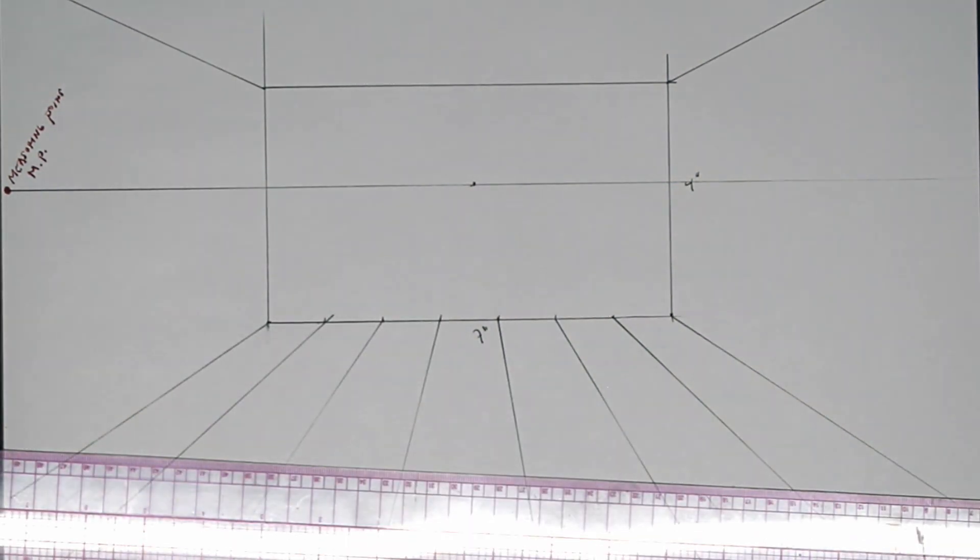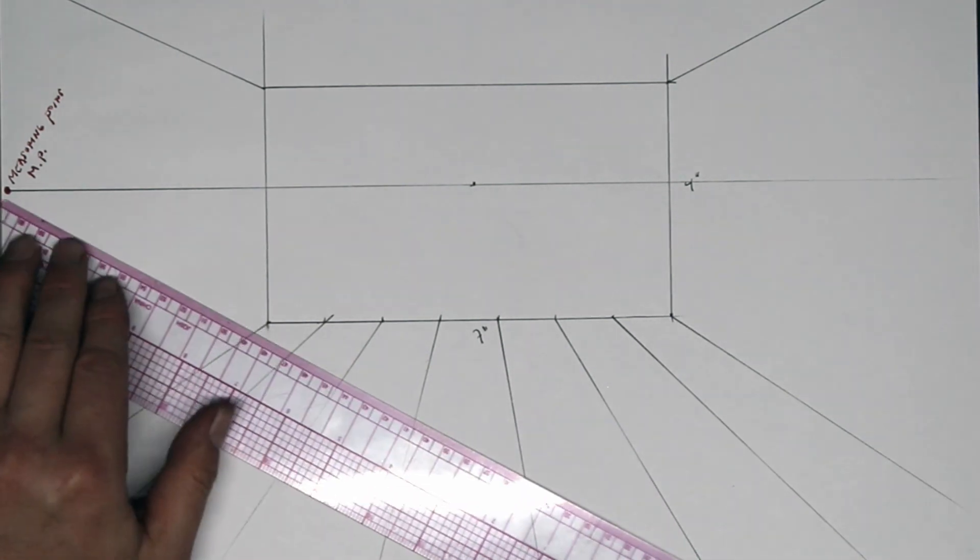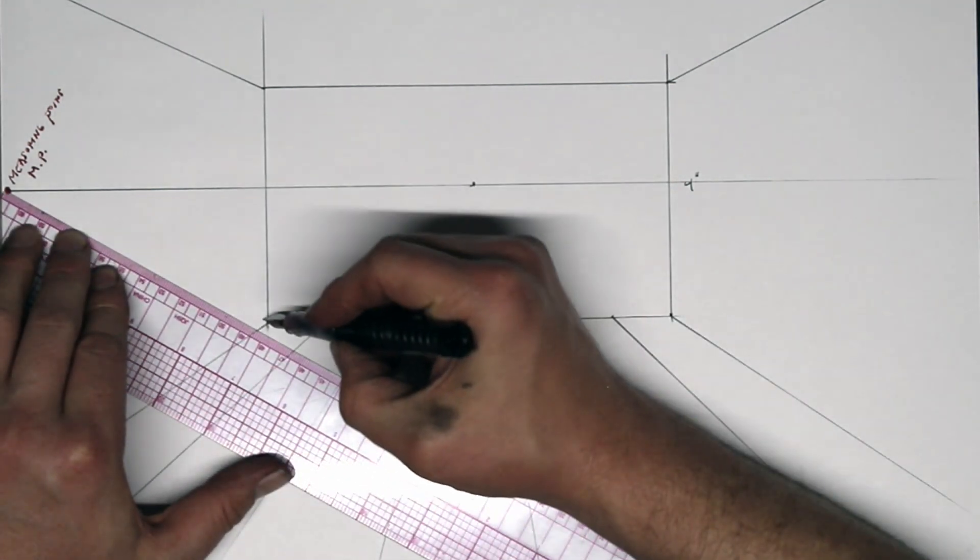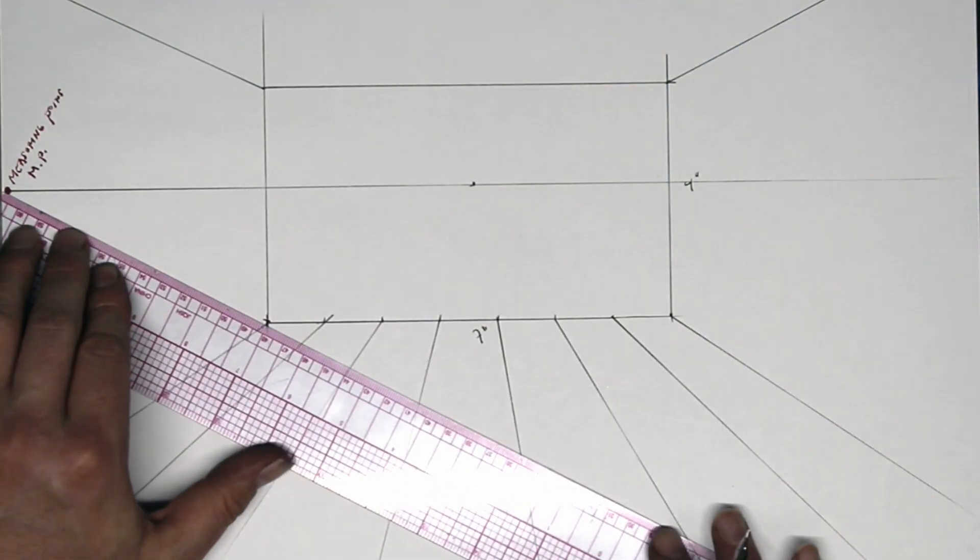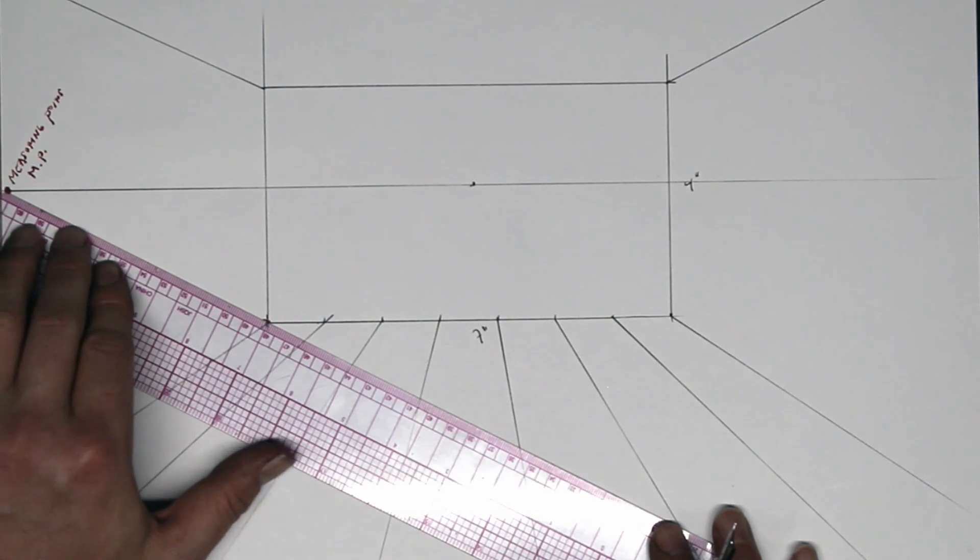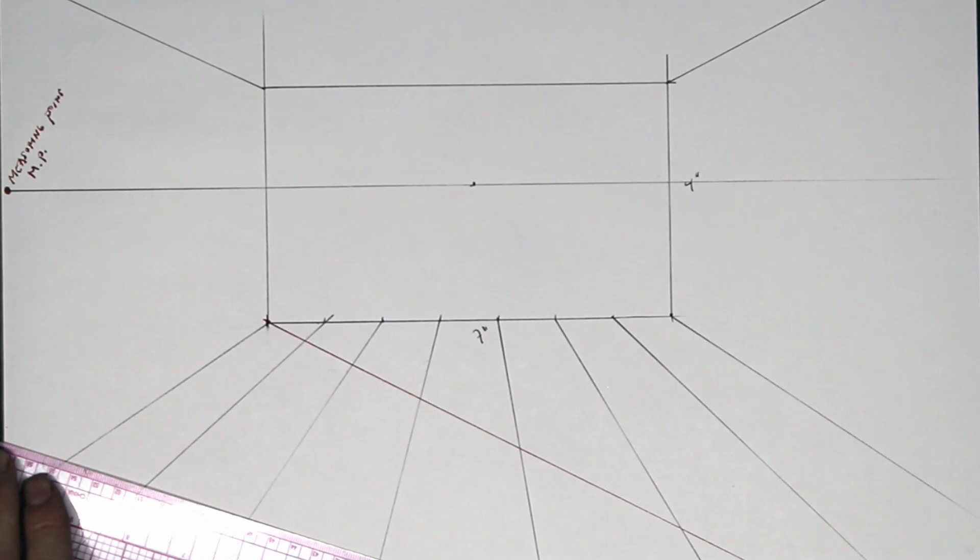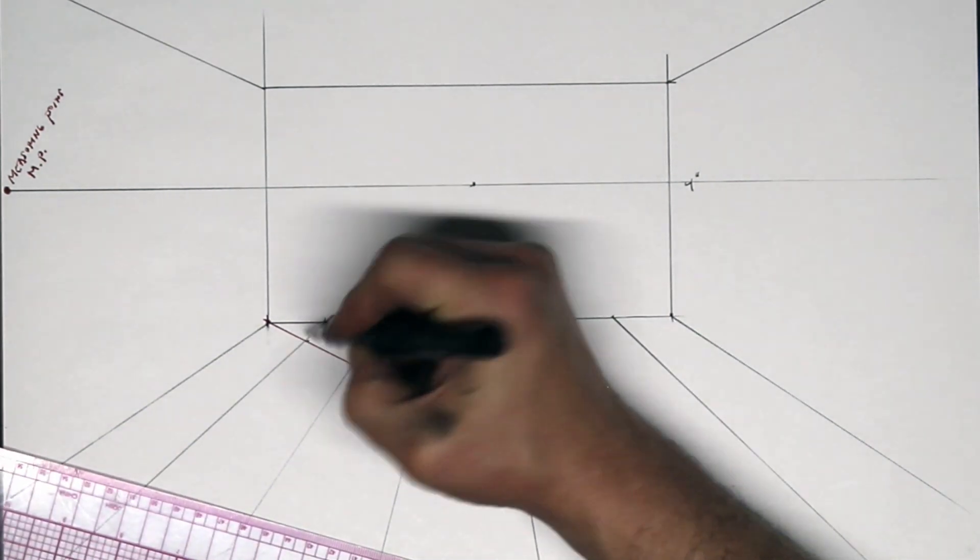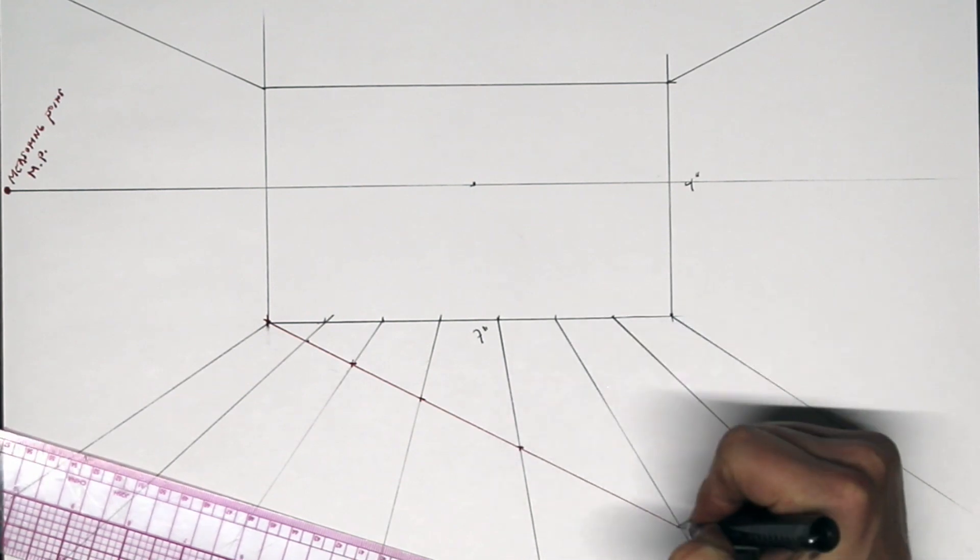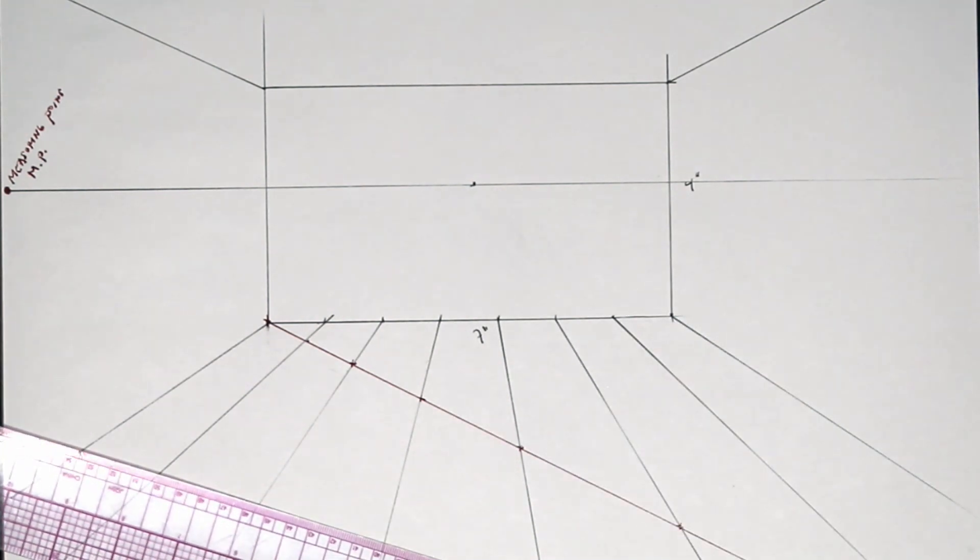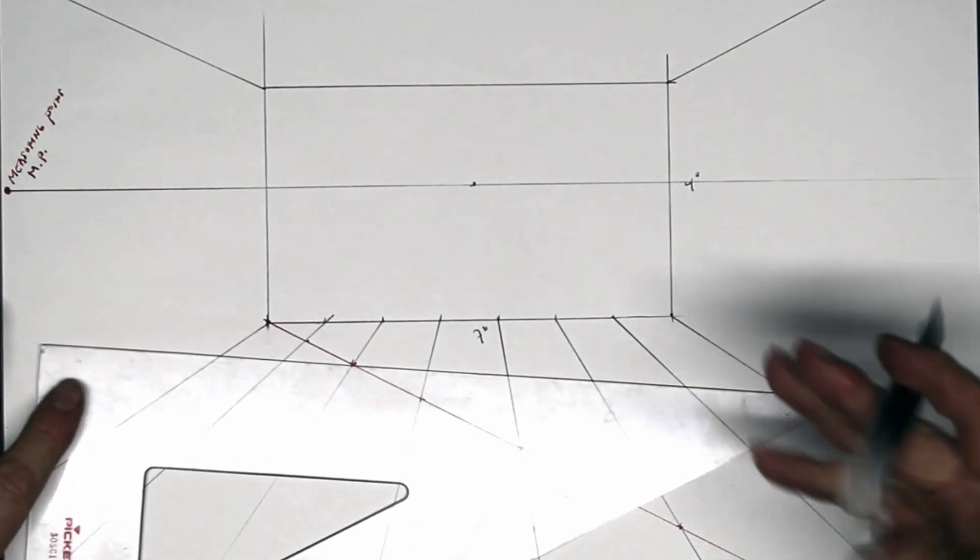How is this measuring point used? Here's how: line up your ruler with the measuring point and the nearest corner of the room, so the nearest corner to the measuring point. Line up your ruler and draw a diagonal all the way across the floor like this. Everywhere this diagonal intersects the orthogonals is your square horizontal division. Now let's use our right angle.